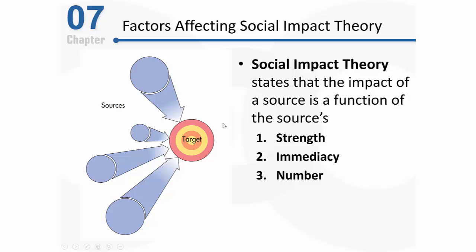It should make basic intuitive sense that a source of social influence — whether it's a friend, a boss, a family member, or a politician — is going to have more influence the stronger it is, the closer it is to you psychologically, and based on their numbers overall. For example, a group of close friends who maybe all live in your apartment building are going to exert more social influence in your life than some estranged uncle who lives out of state.